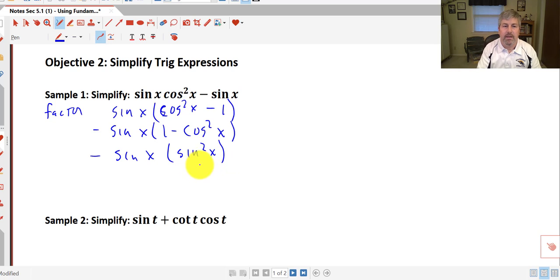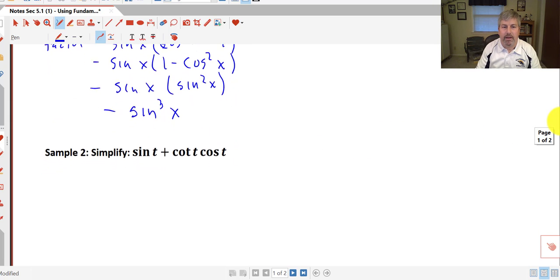That's from our Pythagorean identity. Multiplying those back together, we get the opposite of sine cubed x. Sine times sine squared is sine cubed. So we have simplified that expression.